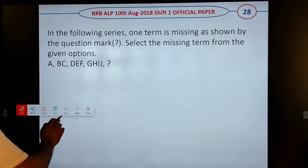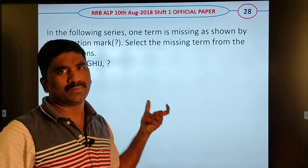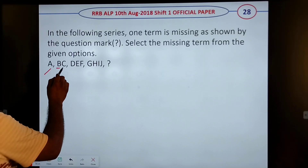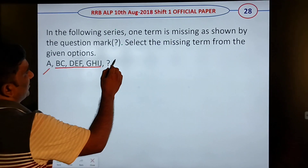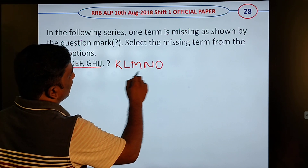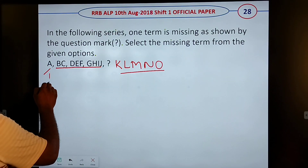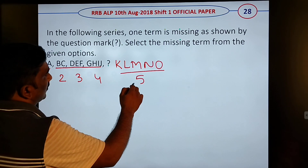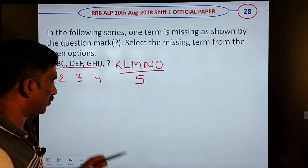The following series — one term is missing. The series goes A, B, C, D, E, F, G, H, I — some are missing. The next series is K, L, M, N, O. The pattern is: write one letter, then two, then three, then three, then four, then five. The missing term follows this pattern.